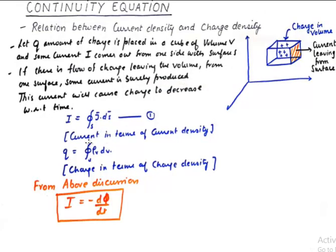Then it is pretty simple that from this discussion that we did here, the current which is produced in this particular scenario is minus dQ by dt. So negative rate of change of charge with respect to time results in the creation of current. So some amount of charge is reducing with respect to time within this volume that is causing my current to be produced.